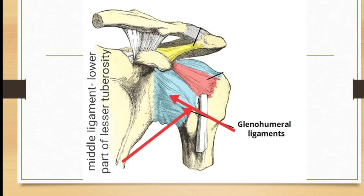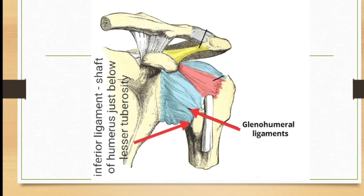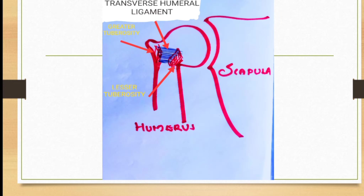There are three glenohumeral ligaments: superior, middle, and inferior. Proximally, the glenohumeral ligament is attached to the upper end of the anterior border of the glenoid fossa. Distally, the superior glenohumeral ligament is attached to the top of the lesser tuberosity, the middle glenohumeral ligament to the lower part of the lesser tuberosity, and the inferior glenohumeral ligament to the shaft of the humerus just below the lesser tuberosity. The transverse humeral ligament is attached proximally to the top of the greater tuberosity and distally to the top of the lesser tuberosity.